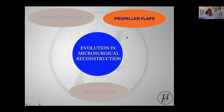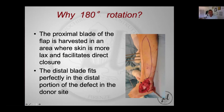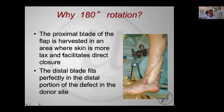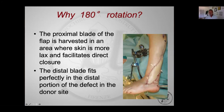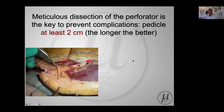Propeller flaps come from the improved knowledge of perforator flaps and were first described by Teo. A 180-degree rotation is preferred for two reasons: first, the proximal blade of the flap is harvested in an area where the tissue is more lax, making direct primary closure easier; and second, the distal blade, rotated 180 degrees, helps cover part of the donor site. At the end, we achieve coverage of the defect with direct closure of the donor site as well.